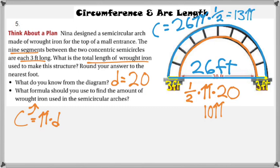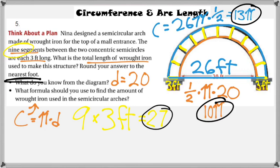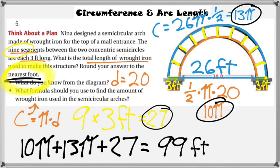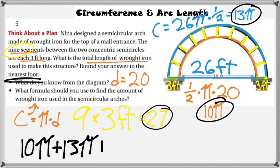One last calculation: there are nine pieces of wrought iron, each three feet long, so nine times three equals 27 feet. Adding everything together — the inner orange arch at 10 pi, the outer blue arch at 13 pi, and the nine connecting pieces at 27 feet — and rounding to the nearest foot gives a total of 99 feet of wrought iron.